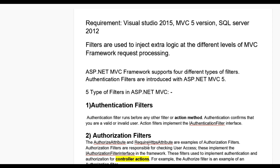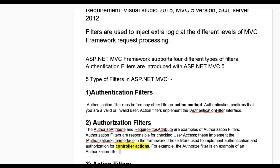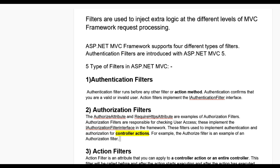Second one is authorization filters. The Authorization attribute and RequireHttps attribute are examples of authorization filters. Authorization filters are responsible for checking user access. They implement the IAuthorizationFilter interface in the framework. These filters are used to implement authentication and authorization for controller actions. For example, the Authorize filter is an example of authorization filters.